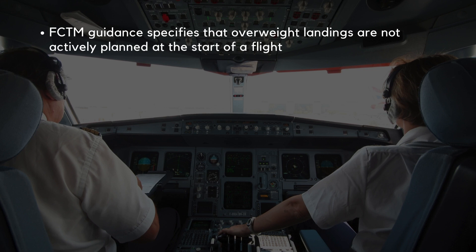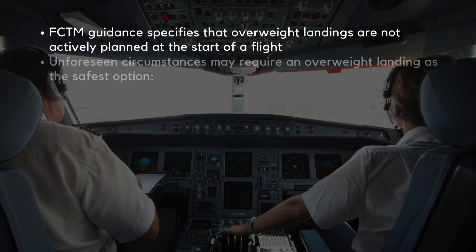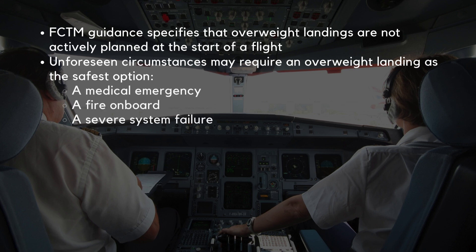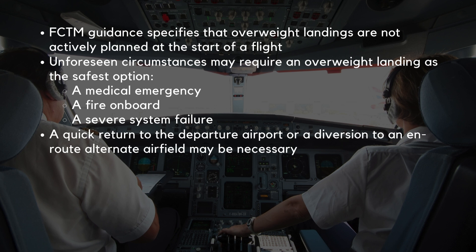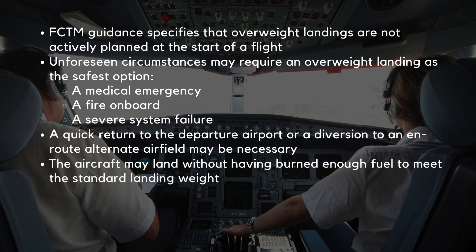FCTM guidance specifies that overweight landings are not actively planned at the start of a flight. Fuel is carefully calculated to ensure the aircraft lands within safe weight limits. However, unforeseen circumstances may require an overweight landing as the safest option. These situations could include a medical emergency, a fire onboard, or a severe system failure. In such cases, a quick return to the departure airport or a diversion to an en route alternate airfield may be necessary, meaning the aircraft may land without having burned enough fuel to meet the standard landing weight.